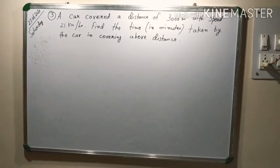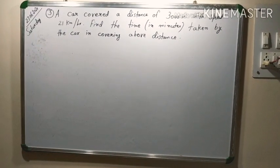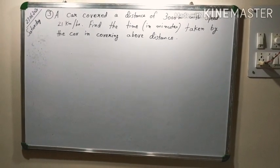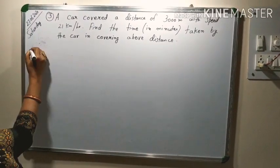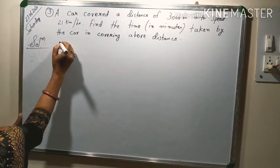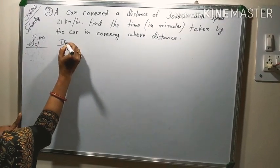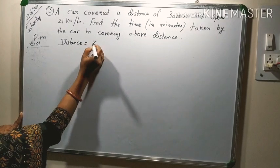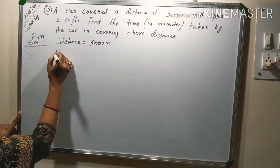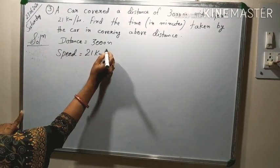Third question was, a car covered a distance of 3000 meter with speed 21 km per hour. Find the time in minutes taken by the car in covering above distance. So in this, first of all, we will mention the given quantities.